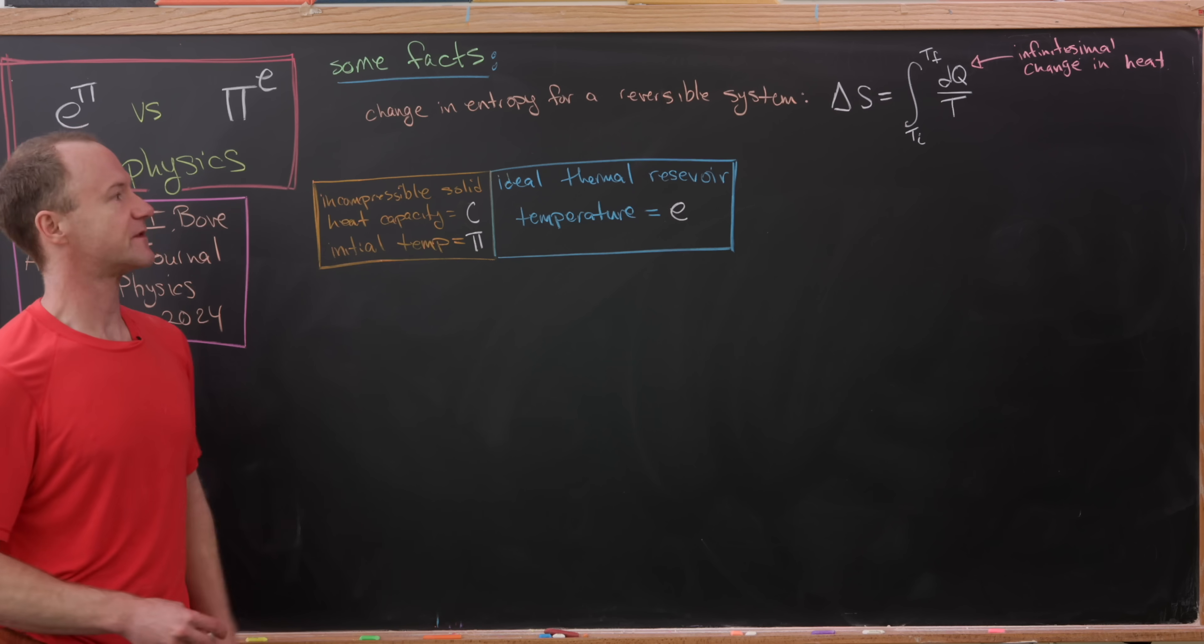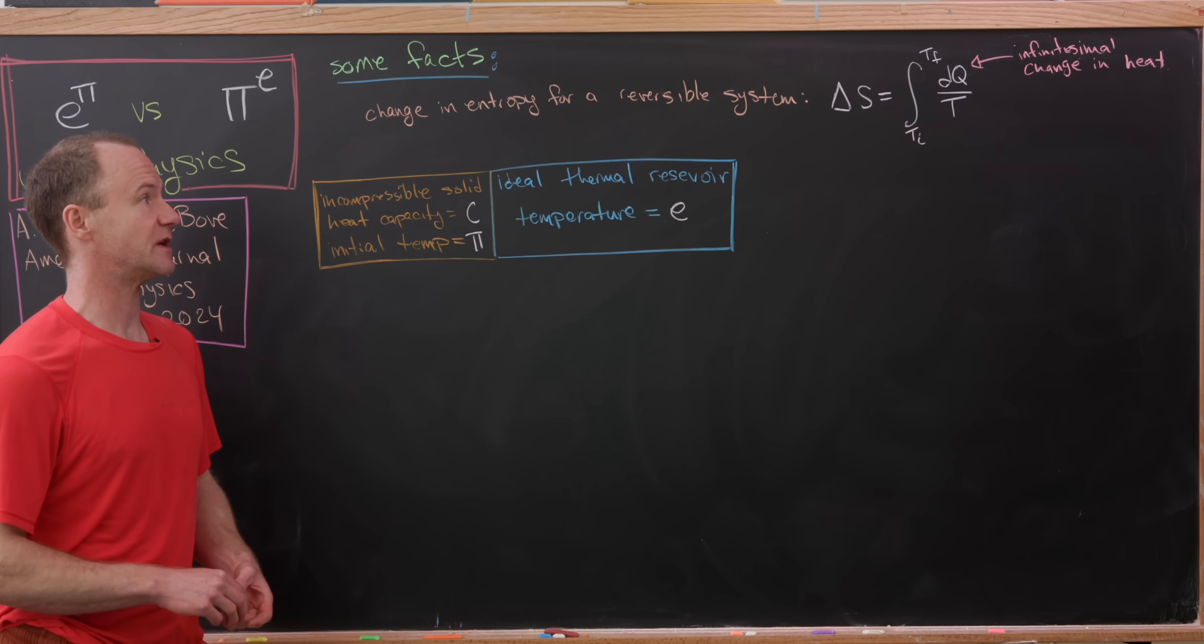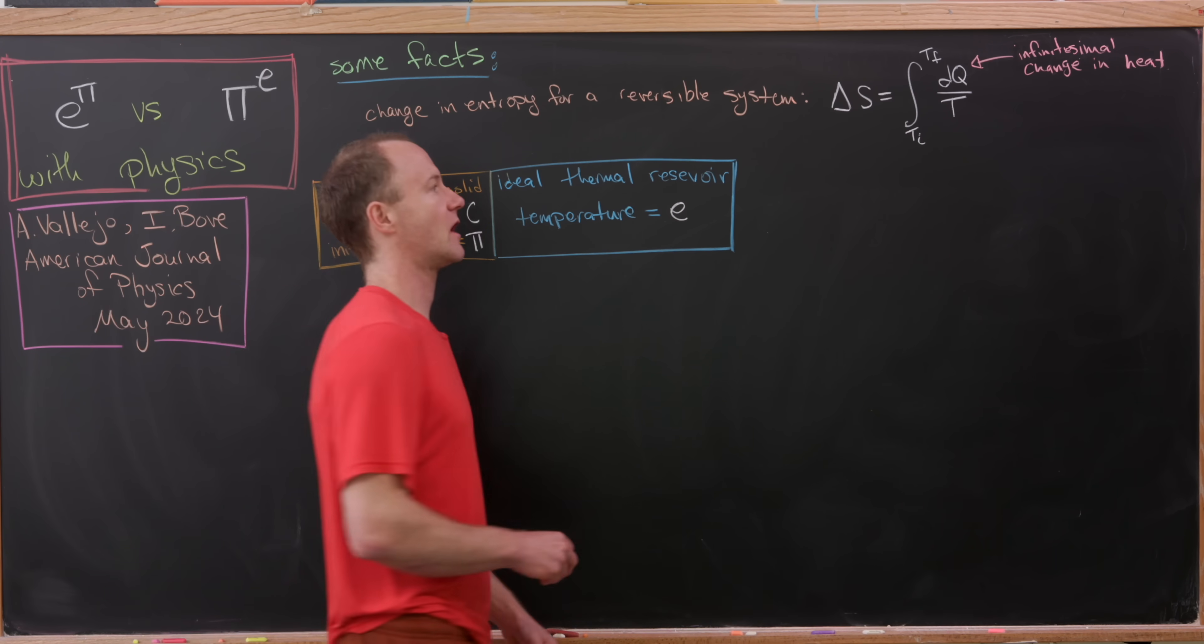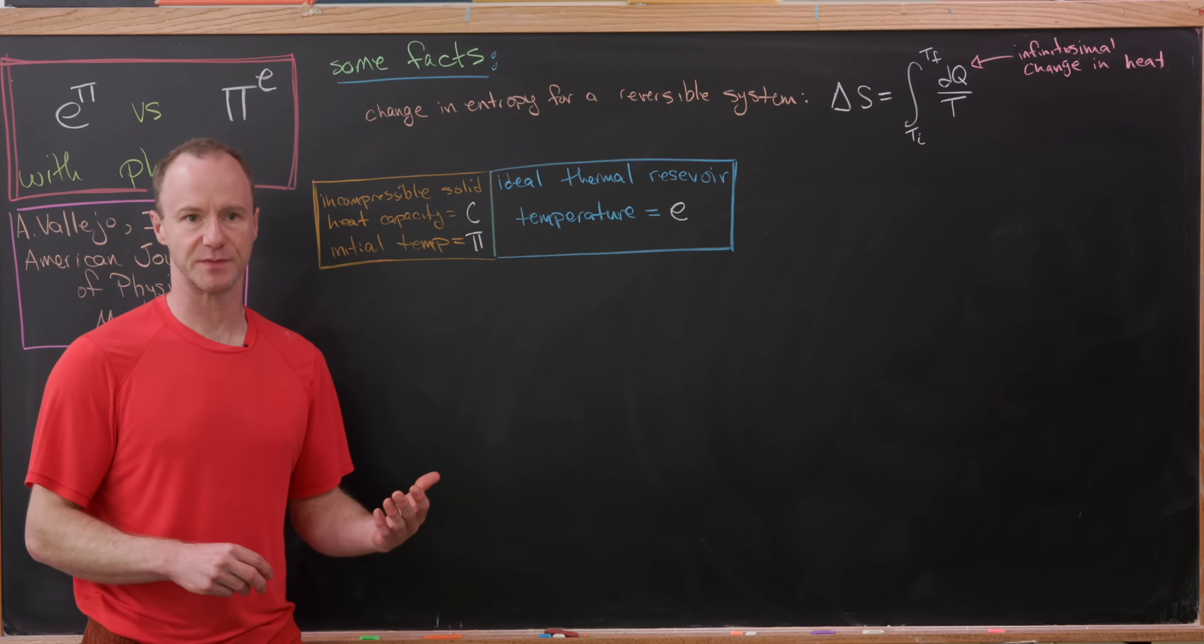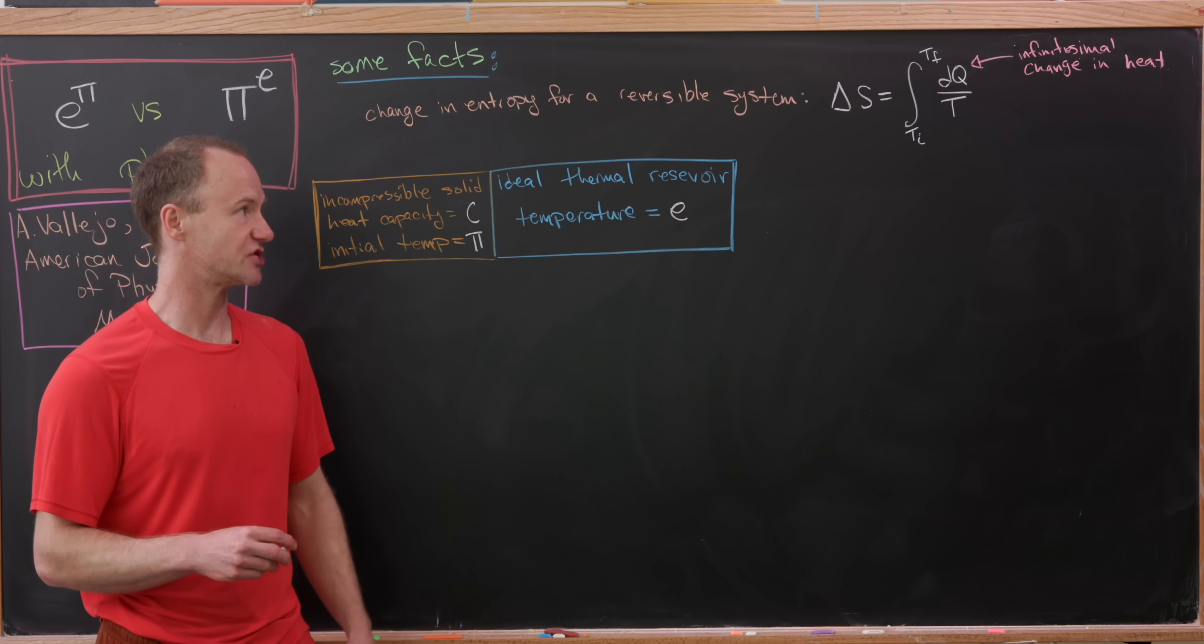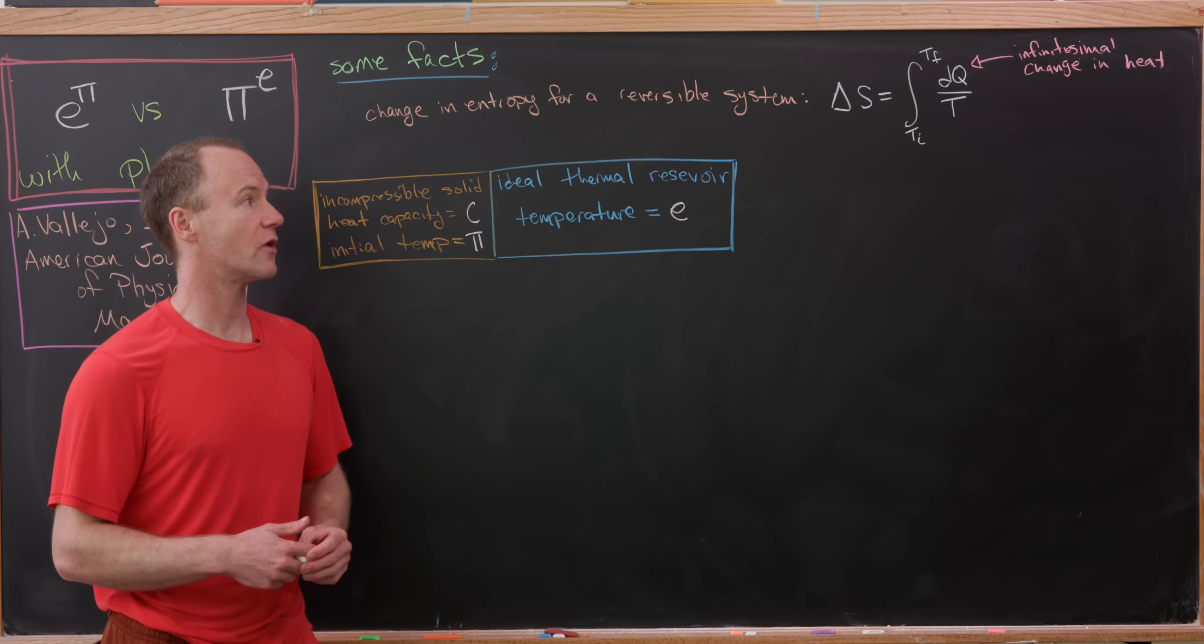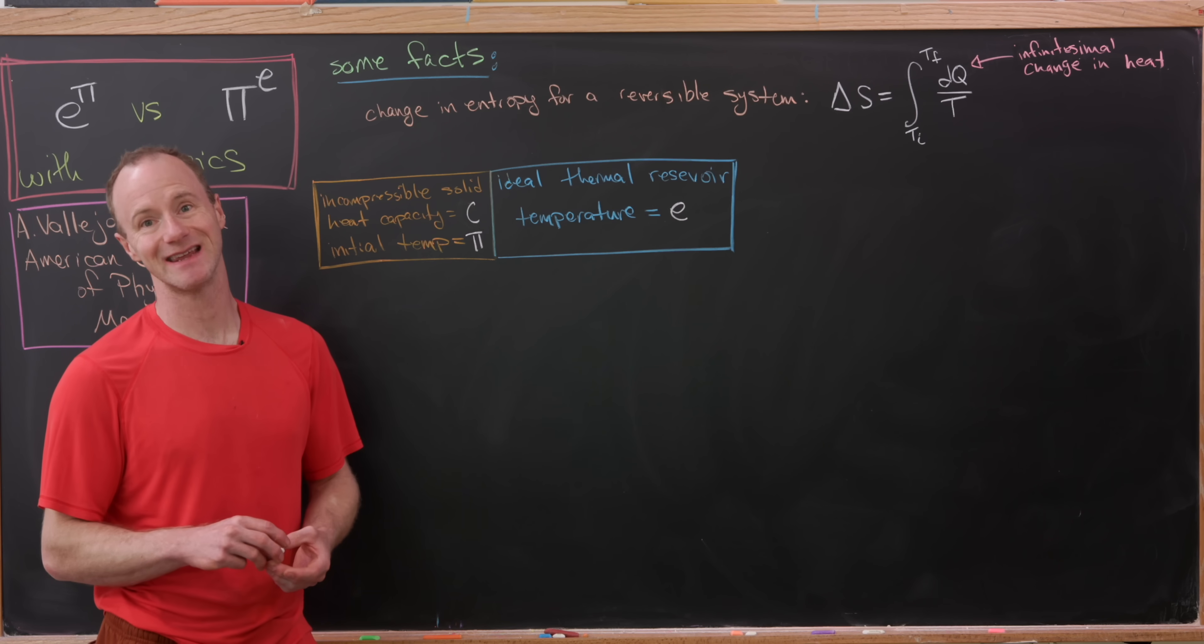Now, we're going to use the following fact, and that is the change in entropy for a reversible system can be calculated via the following equation. So we have delta S, where S is the entropy, so delta S is the change in entropy, is the integral from some initial temperature to some final temperature of dQ over T, where T is the temperature, and dQ is some sort of infinitesimal change in heat.